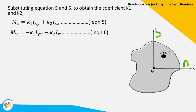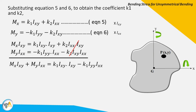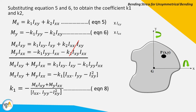Following similar steps for k1, we multiply equation five by Ixy and equation six by Ixx, then cancel common terms to get: Mx·Ixy + My·Ixx = −k1·(Ixx·Iyy − Ixy²). Rearranging gives k1 = −(Mx·Ixy + My·Ixx) / (Ixx·Iyy − Ixy²) — equation eight.